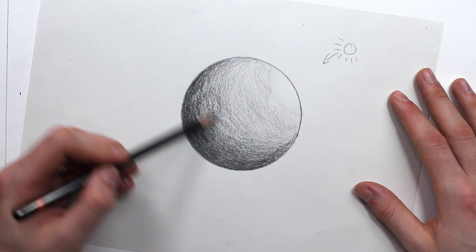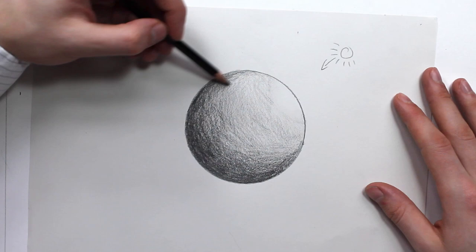Hello and welcome back to ArtBites. Today we are going to be looking at the visual element of form. Form refers to three-dimensional objects.